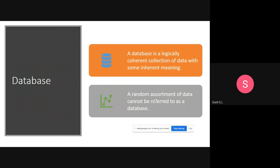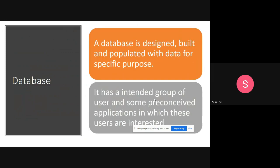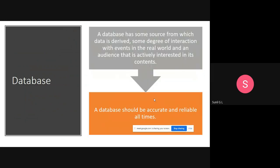A database is a logically coherent collection of data with some inherent meaning. A random assortment of data would not be called a database. A database is designed, built, and populated with data for a specific purpose. It has an intended group of users and some preconceived applications in which those users are interested. We create the database for that specific group of users and their applications.